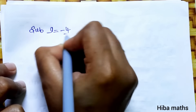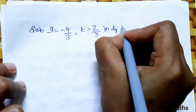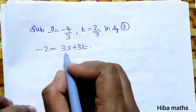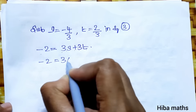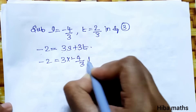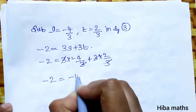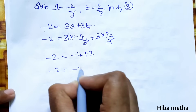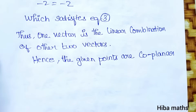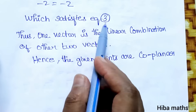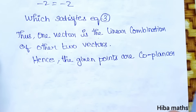We have s = -4/3 and t = 2/3. Substituting into equation 3: -2 = 3(-4/3) + 3(2/3). The 3s cancel: -2 = -4 + 2 = -2. This is true! Since all three equations are satisfied, the position vectors are coplanar. Thus one vector is a linear combination of the other two, hence the given points are coplanar.